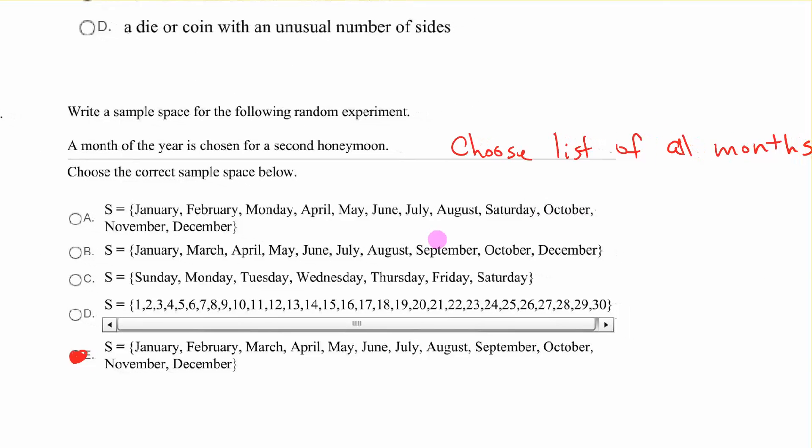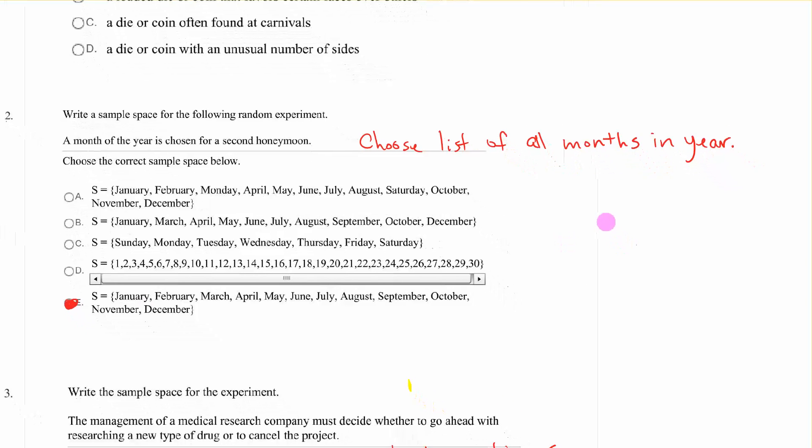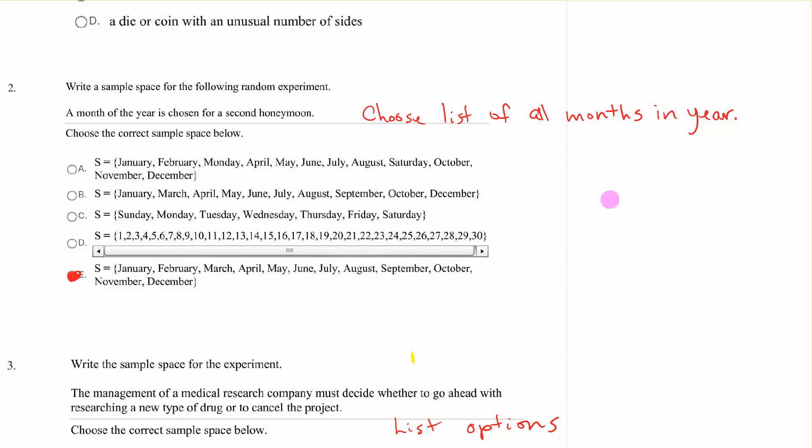Write a sample space for the following random experiment. A month of the year is chosen for a second honeymoon. So we're talking about a sample space, that means choose the list of all the months in the year. So down here we've got January, February, all the way to December. And if you look up here, they've put in the days of the week, and in this one we don't have all the months. This is days, this is numbers. So this is the actual sample space for this one.